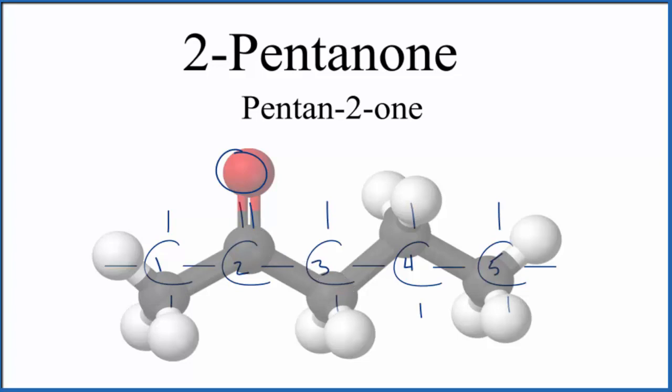You also see it written like this sometimes. Here we have our carbon atoms right here. And on that second carbon atom, there's our double bonded oxygen. So that's the structure, the structural formula for 2-pentanone.